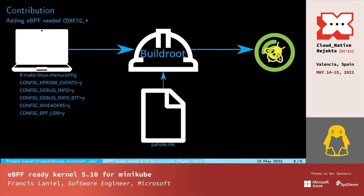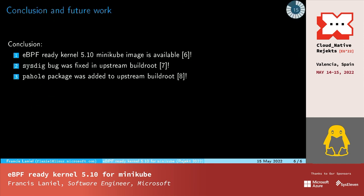At this point I was able to get an eBPF-ready image with kernel 5.10. To conclude: an eBPF-ready kernel 5.10 for Minikube is now available. The sysdig bug was fixed in upstream BuildRoot, and a pahole package was added to upstream BuildRoot. So if you have an SBC somewhere and want to do eBPF on it, you can now do it with upstream BuildRoot.